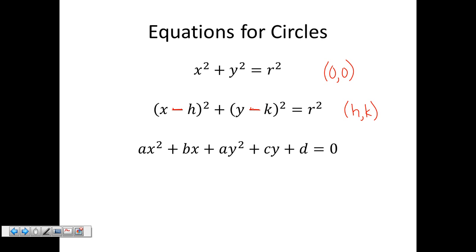The bottom equation is what we get if we foil out these binomials, combine like terms, and bring everything to one side. We know it's a circle because we see a positive x squared term and a positive y squared term with the same coefficient. To move from this third equation to the second equation, which is easier to graph with, I complete the square.